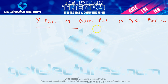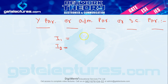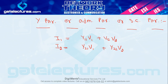If you remember, in the last video we studied the Z parameter and had two KVL equations. For the Y parameter or admittance parameter, we have KCL equations: I1 = Y11·V1 + Y12·V2 and I2 = Y21·V1 + Y22·V2. These are the Y parameters.